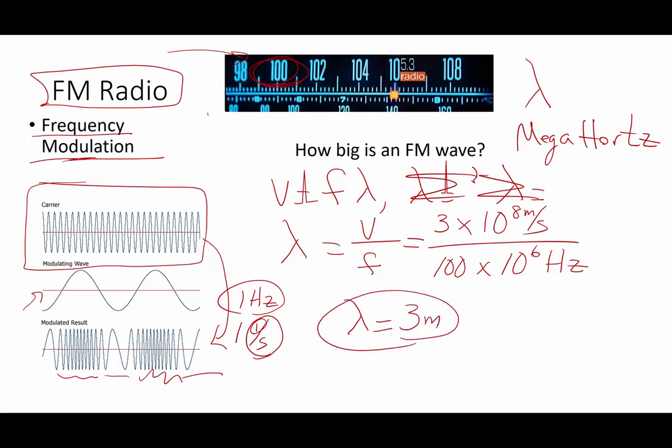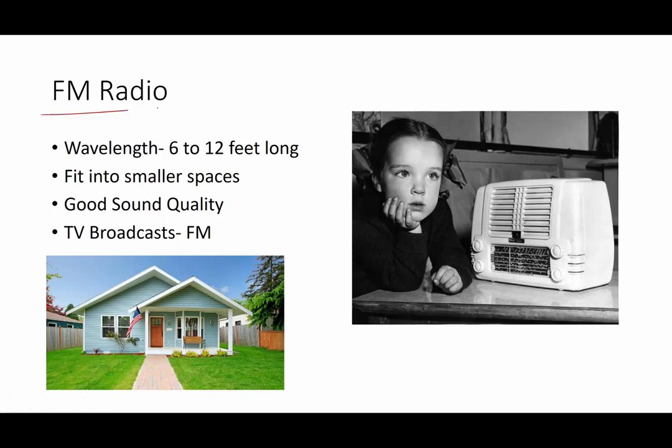So how big is 3 meters? Well, a meter is a little bit bigger than a yard, so we're talking about 3 yards. I personally am a little over 1.5 meters tall. So it's about two medium-sized human beings laid end-to-end is one FM radio wave. So that's not terribly large. But because of the fact that they are 6 to 12 feet long, FM radio waves can fit into small spaces. They actually can get in through windows, and they have relatively good sound quality. That's why we broadcast. TV sound is often broadcast on FM, and we can get decent quality music on FM.